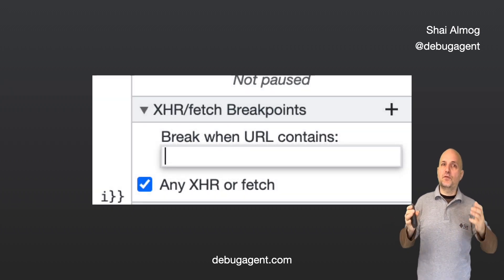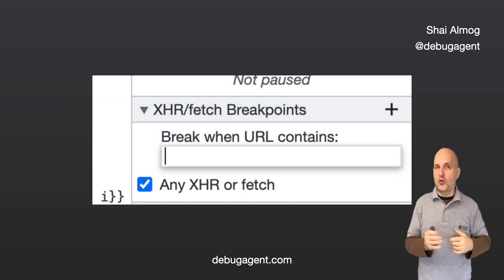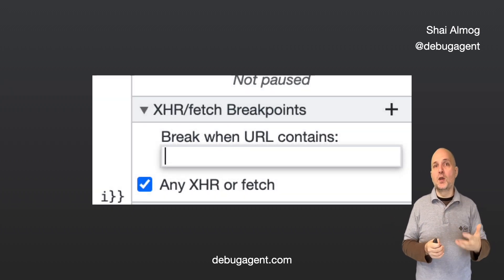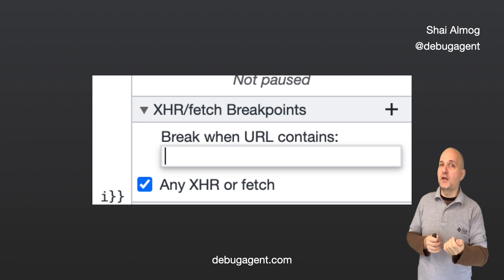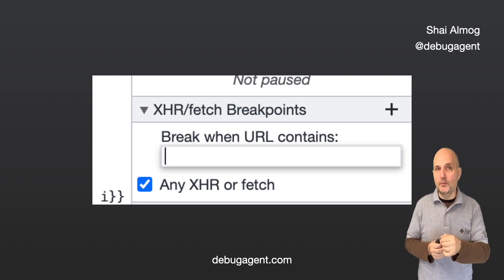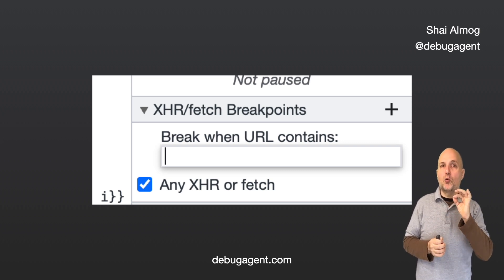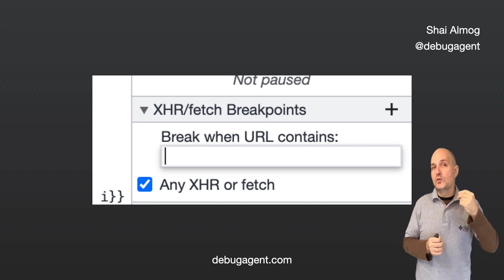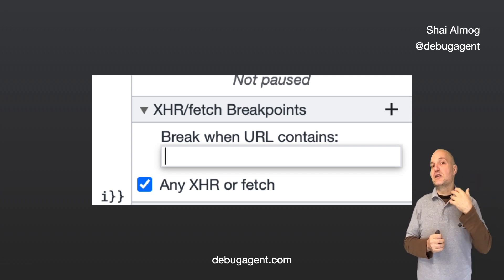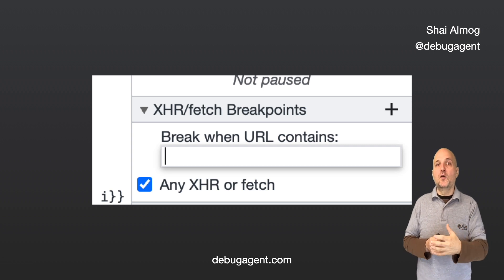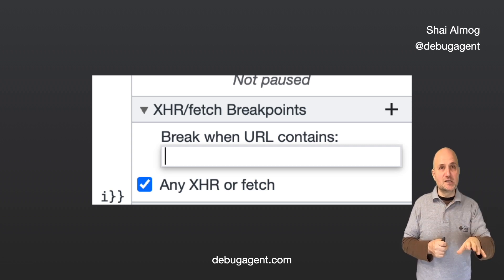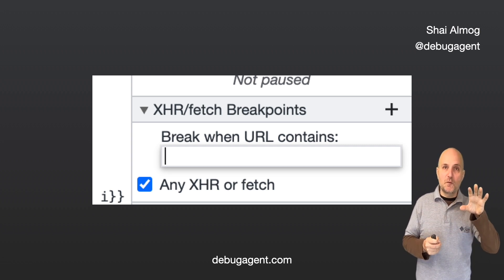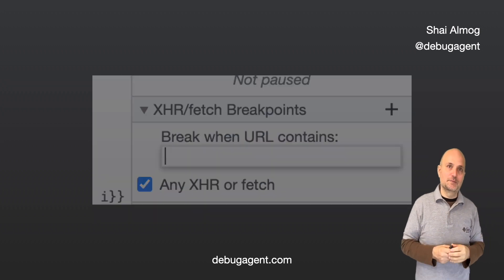Here we have the XHR breakpoint area in Chrome. It's located in the sources tab under the call stack. Notice that if we don't fill in the URL filter, an XHR breakpoint is set for any XHR request, which might get noisy.